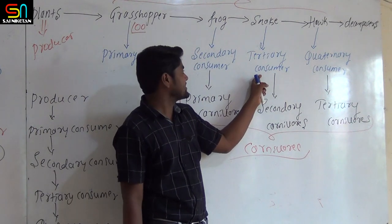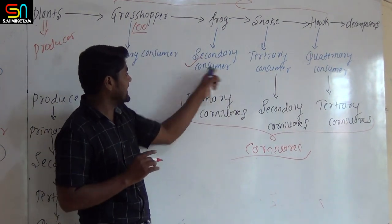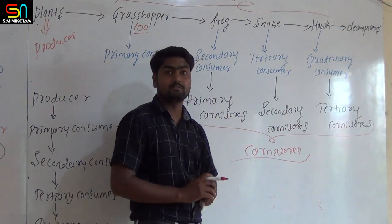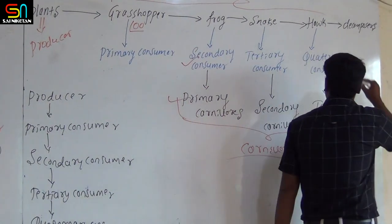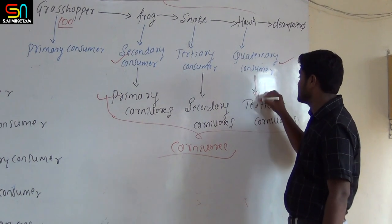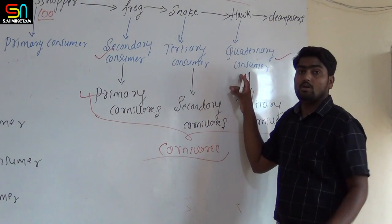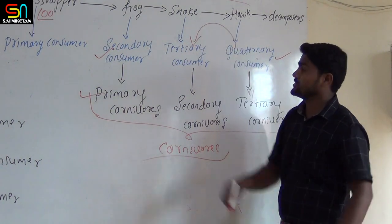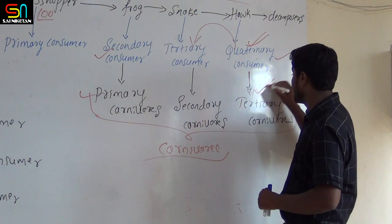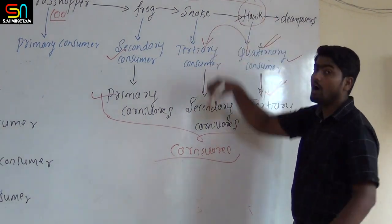Next, tertiary consumer. The tertiary consumer is the organism which feeds on the secondary consumer. Those organisms which feed on the secondary consumer or primary carnivore are called tertiary consumers, also called secondary carnivores. Finally, that is called the quaternary consumer, also called tertiary carnivores.